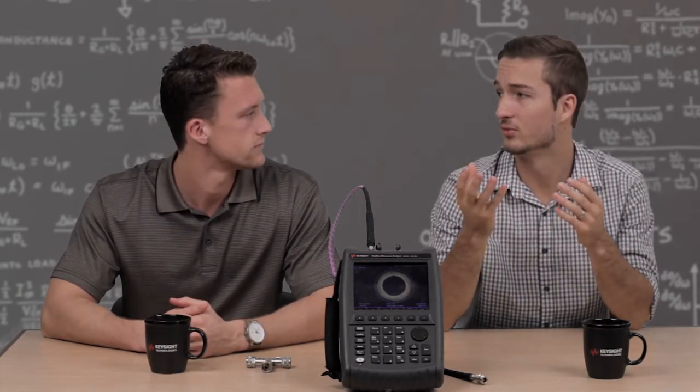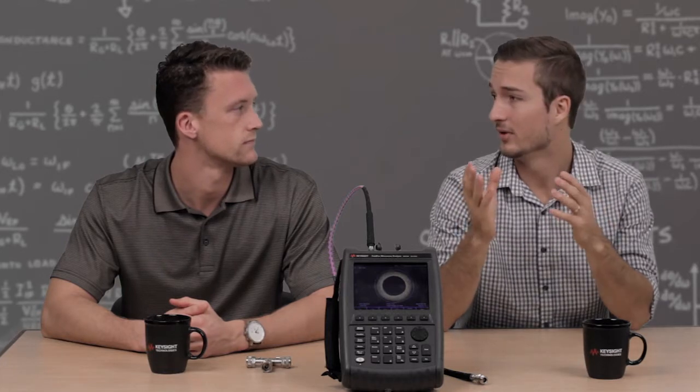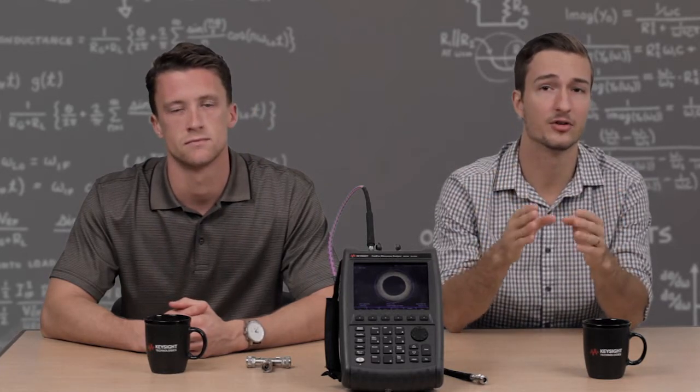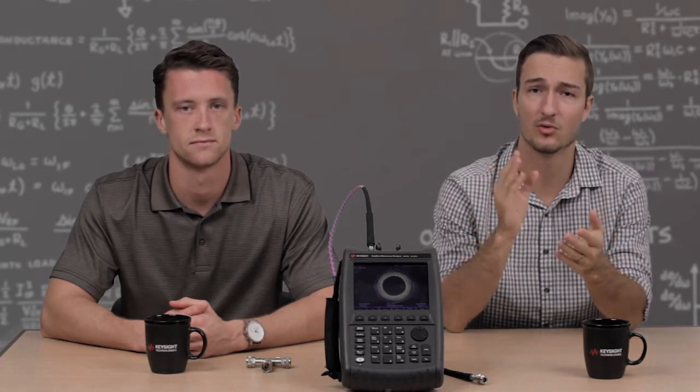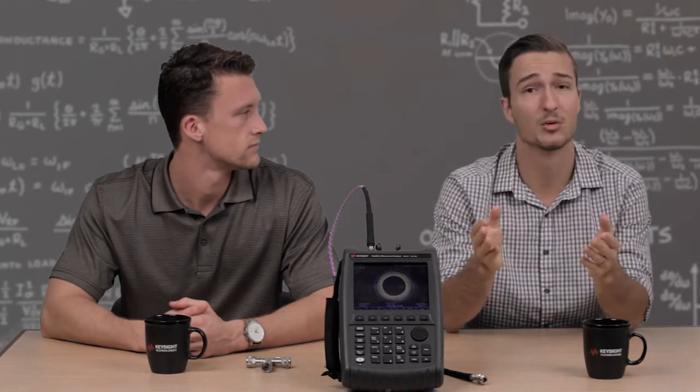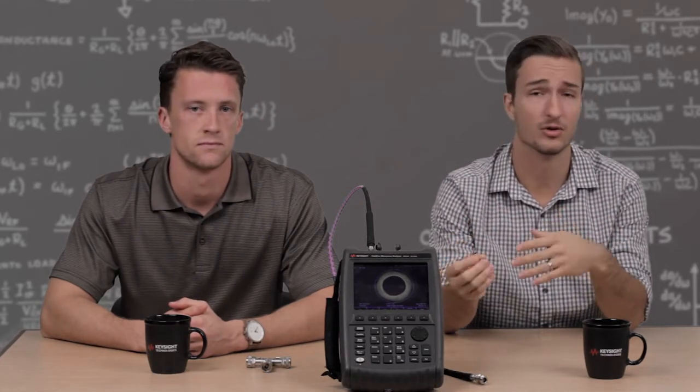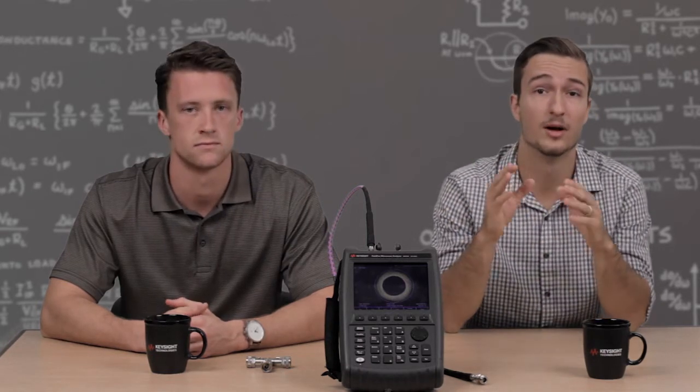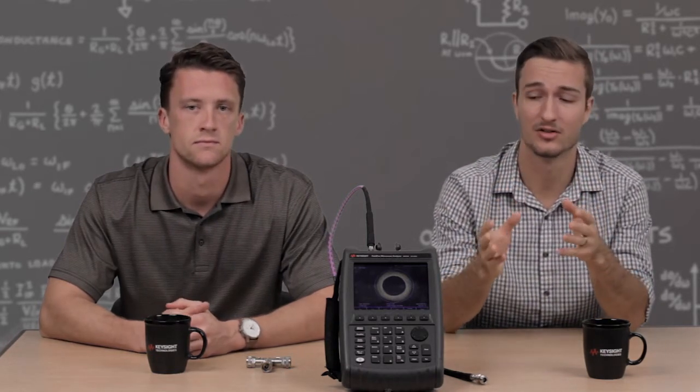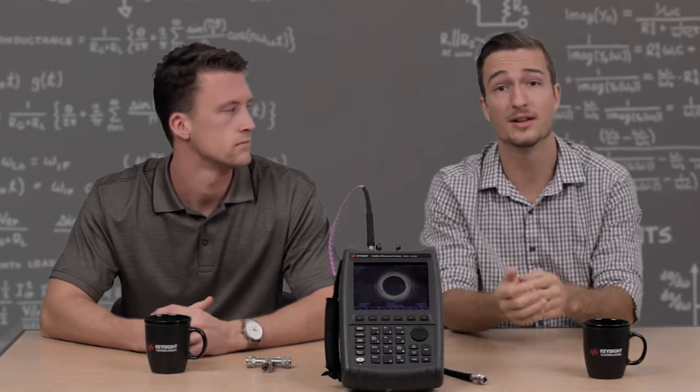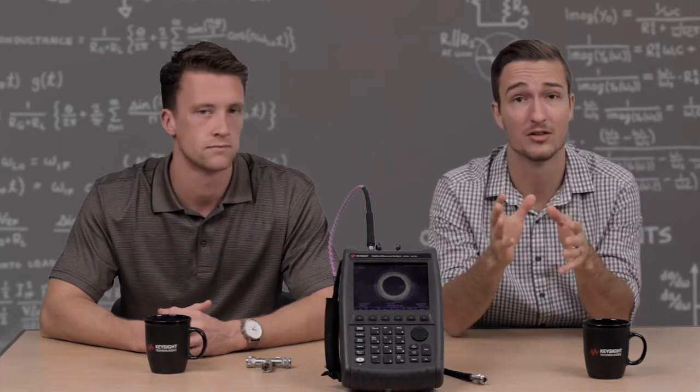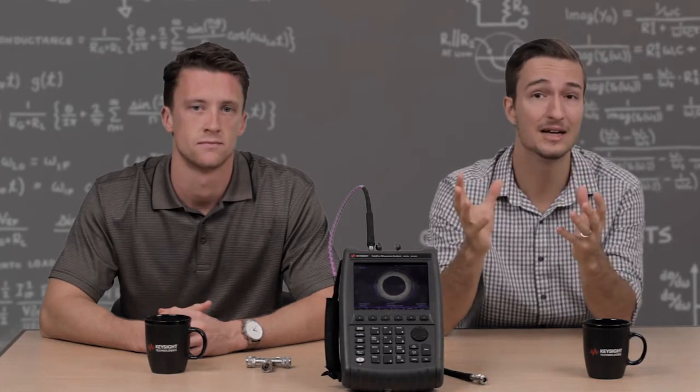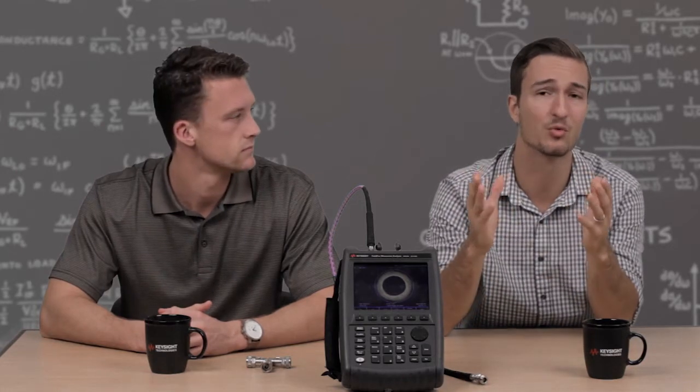So I guess the first question is, what is a Smith chart? Now while these things can look intimidating at first, they're really quite simple. It's just a graphical representation of normalized impedance. Smith charts are used in transmission line theory as well as RF circuit design when designing impedance matching networks. The network analyzer and consequently the FieldFox would use a Smith chart to show complex impedance over a specific range of frequencies.